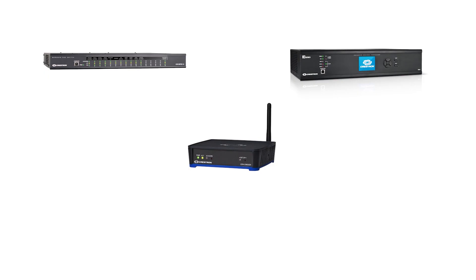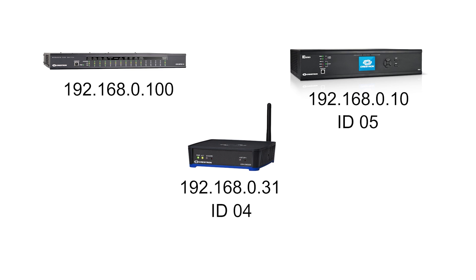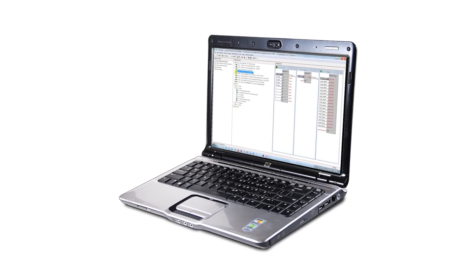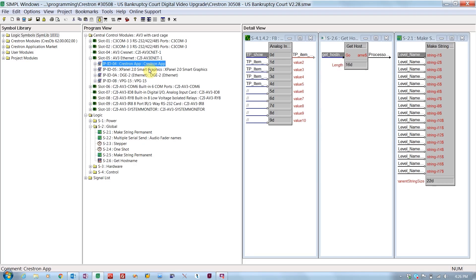If Crestron devices are to communicate with each other on an Ethernet network, it's necessary to set up an IP table on those devices. An IP table has two parts of information. The first part is the IP address of the device on that network. The second part is very similar to Crestnet — there are 252 available IP IDs. The IP ID set on the device must match the IP ID of the device set by the programmer in the program. The process of connecting to the device and setting the IP ID using the Toolbox software is covered in another video in this series.